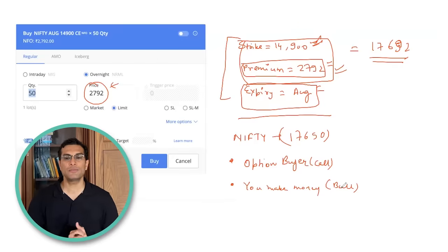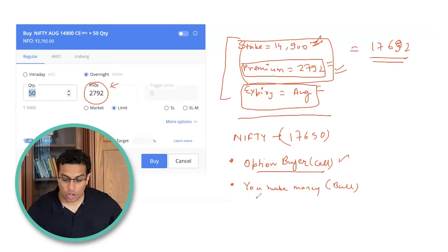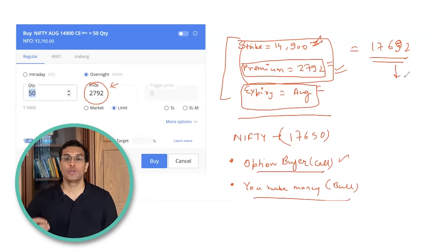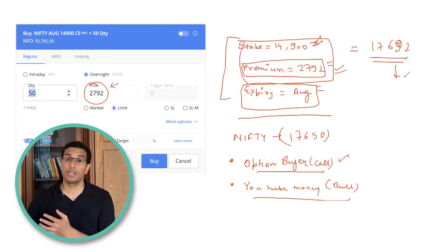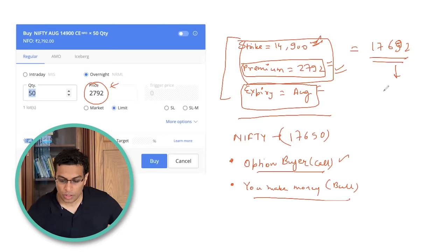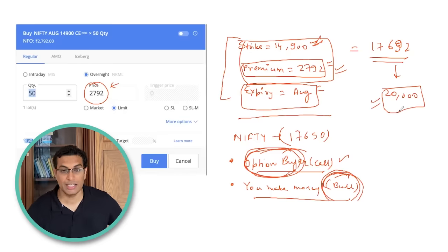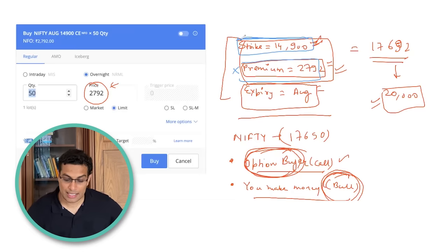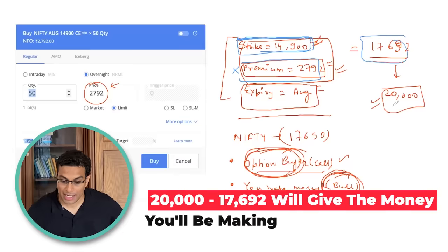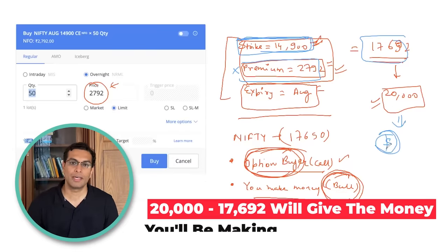Now let me tell you how you would make money by buying this call option. At the time of shooting, Nifty is trading at roughly 17,650 rupees. If you aggregate the strike price and premium — 14,900 plus 2,792 — you get roughly 17,692. This becomes the number you need to beat. If you are a call option buyer, you make money when the markets go up. If Nifty goes to 20,000 before the August expiry, you subtract the aggregate of strike and premium from that level — that is the amount of money you make.